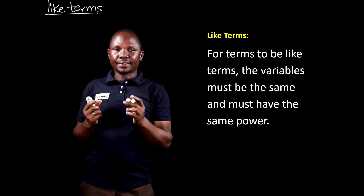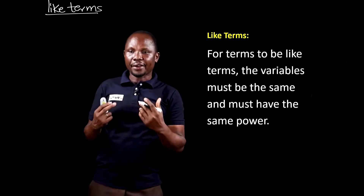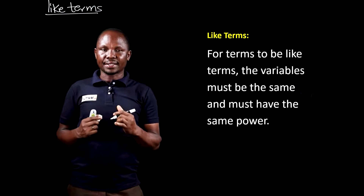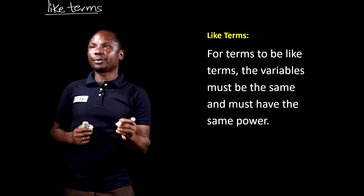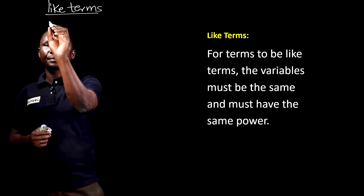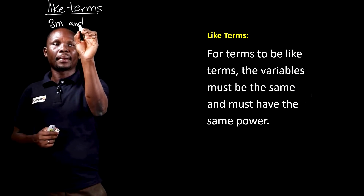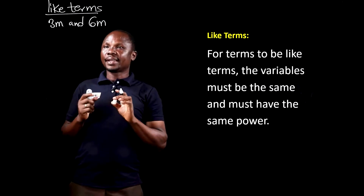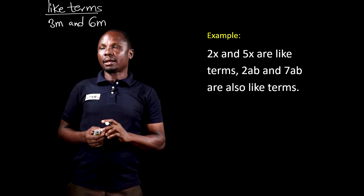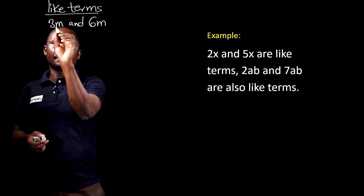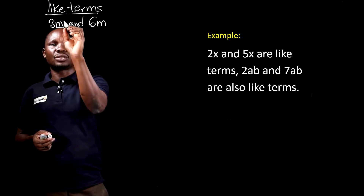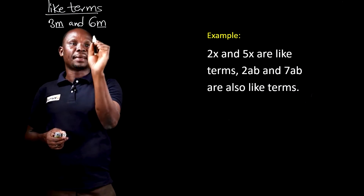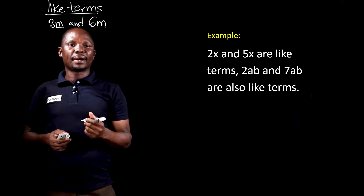For algebraic terms to be like terms, the variables must be the same and must have the same power. For example, if we have 3m and 6m, they are like terms because the power of m in 3m is 1 and the power of m in 6m is also 1. So, 3m and 6m are like terms.